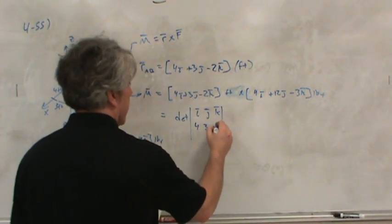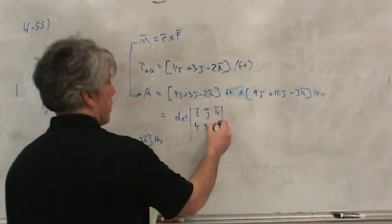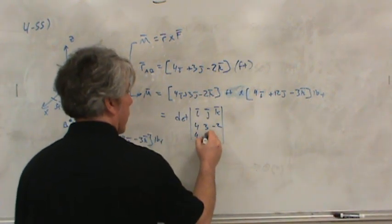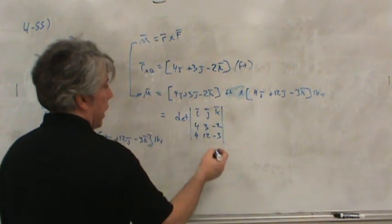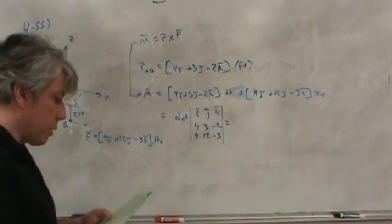So, 4, 3, negative 2, just picking off the components. And then 4, 12, negative 3, picking off the components of the force. And then calculate the determinant of this matrix.